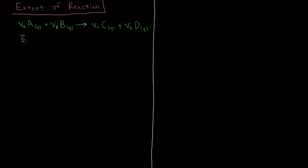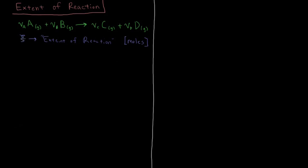As suggested by the video's title, we're going to define a quantity xi — the Greek letter xi — which we're going to call the extent of reaction. The extent of reaction tells us how things are changing in one direction or the other in terms of the number of moles of all these quantities as the reaction progresses. It is in units of moles. Note that stoichiometric coefficients are unitless, so a stoichiometric coefficient times the extent of reaction gives you a total unit of moles.